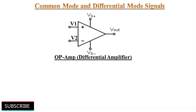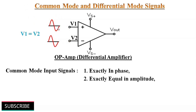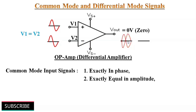Common mode and differential mode signals: as we know, the input stage of an operational amplifier is a differential amplifier stage. An operational amplifier amplifies the difference between its two input signals — namely, the non-inverting terminal and inverting terminal. When the two inputs of a differential amplifier are exactly in phase and exactly equal in amplitude, meaning V1 equals V2, they are called common mode signals. Common mode signals are rejected or not amplified by the op-amp, because output signals of equal amplitude but opposite phase cancel each other, producing 0 volts at the output. This action is called common mode rejection.